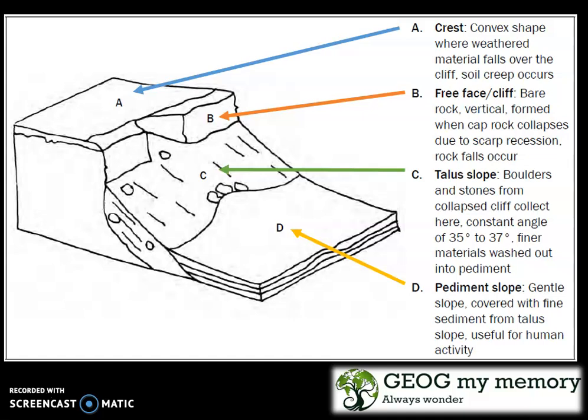B is the free face or cliff. You have bare rock which is vertical and formed when the cap rock collapses due to scarp recession. The rocks fall over.